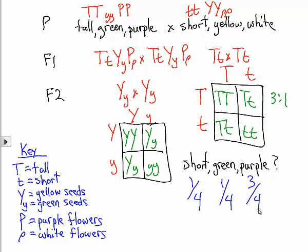So the probability of all together getting a short, green, and purple flowered plant, we multiply the separate probabilities together. We have one times one times three is three. And four times four is sixteen, times four is sixty-four. Three sixty-fourths.